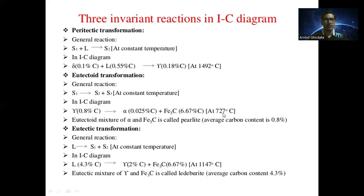This transformation occurs at 727 degrees Celsius. The eutectoid mixture of alpha ferrite and Fe₃C is called pearlite, with an average carbon content of 0.8 percent. This eutectoid transformation is applicable for general steel materials with carbon ranging from 0 to 2 percent, producing hypo-eutectoid and hyper-eutectoid steels.